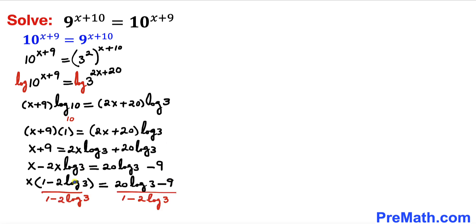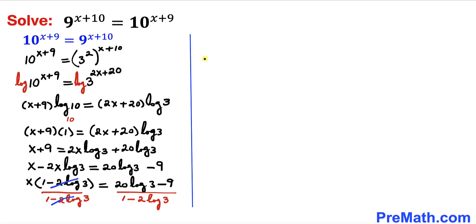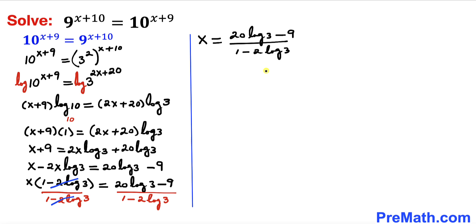Now let's go ahead and divide both sides by (1 − 2·log(3)) to isolate x. So that factor cancels on the left, and therefore we end up with x on the left hand side equals (20·log(3) − 9) all over (1 − 2·log(3)).